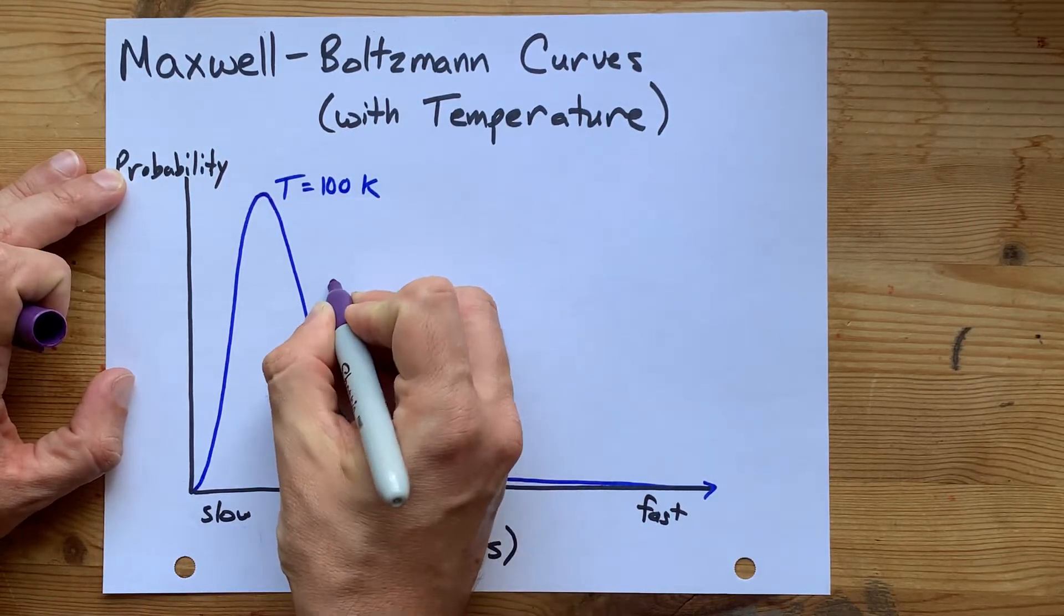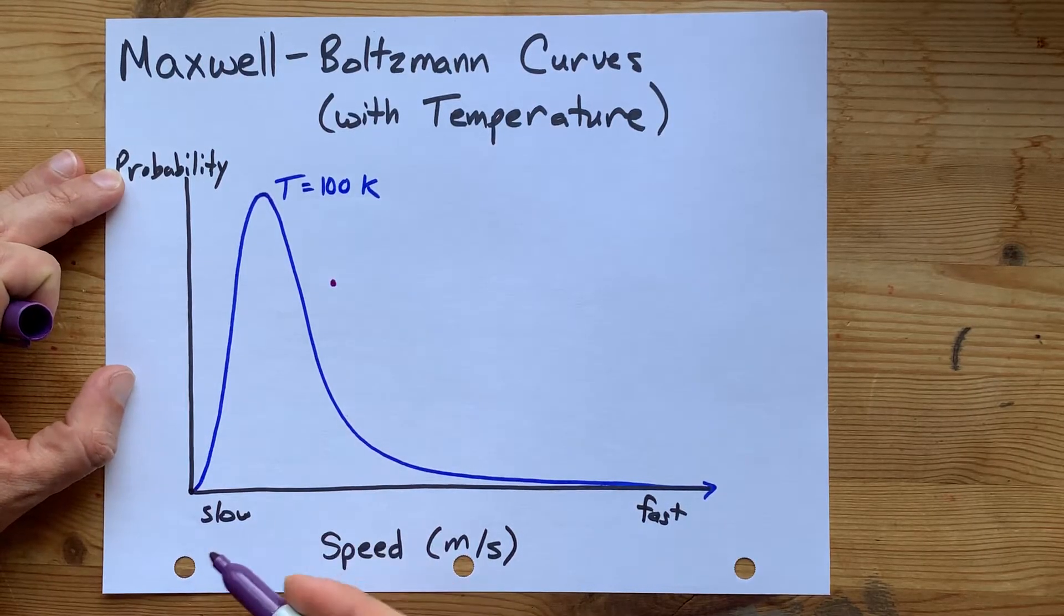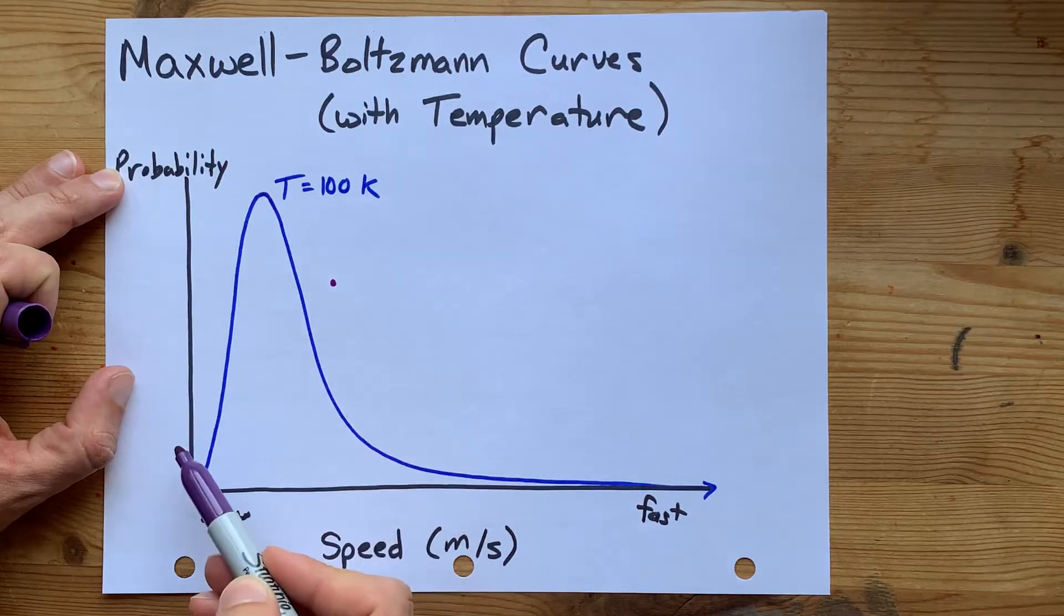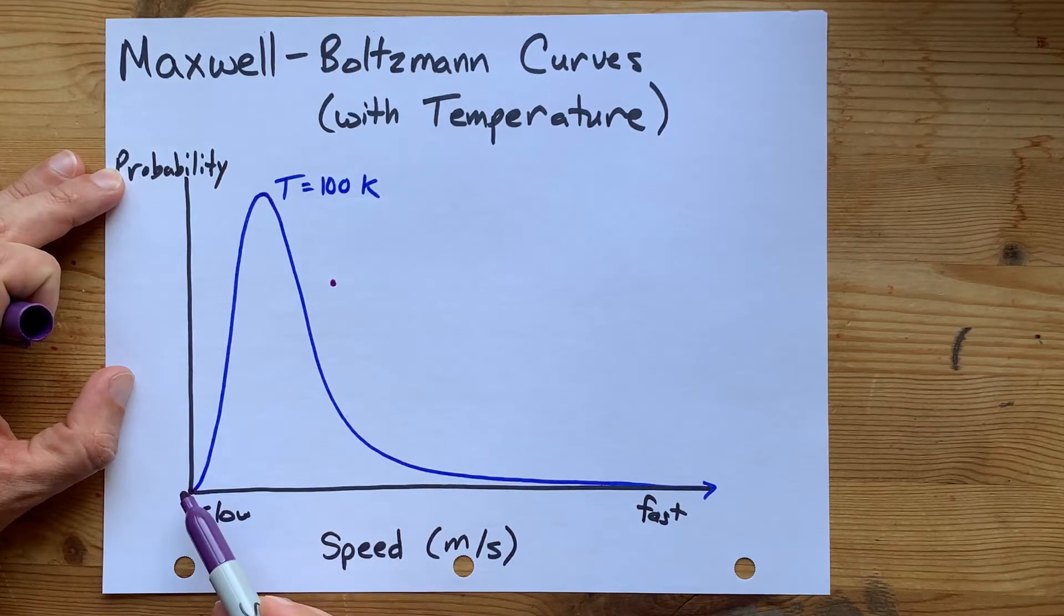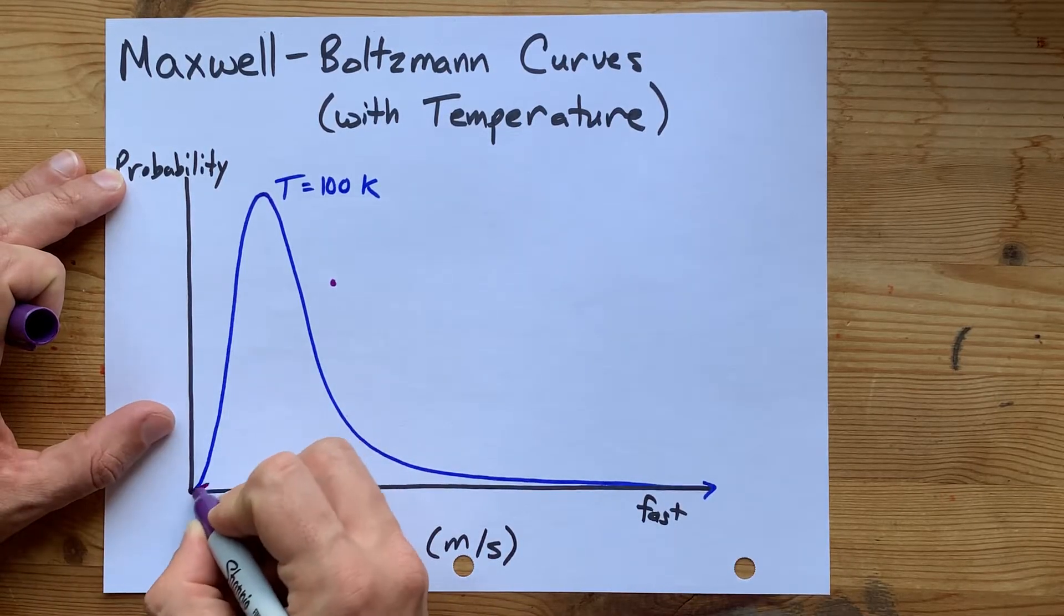I'm going to make it about here. So I'm going to start at 0, 0, because there's a zero probability that the molecule is not traveling at all. All molecules are in motion, at least in a gas.